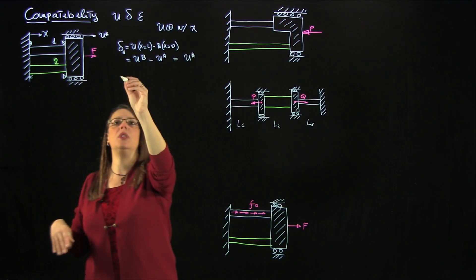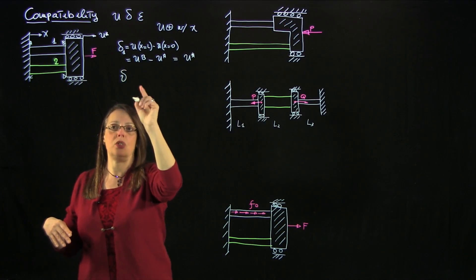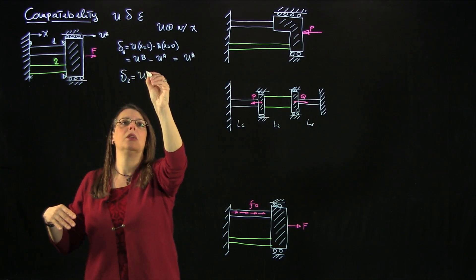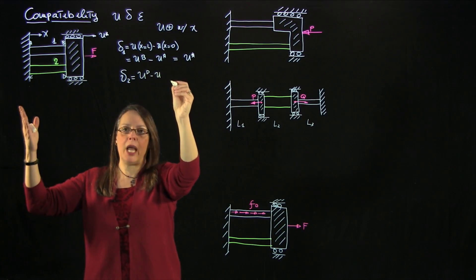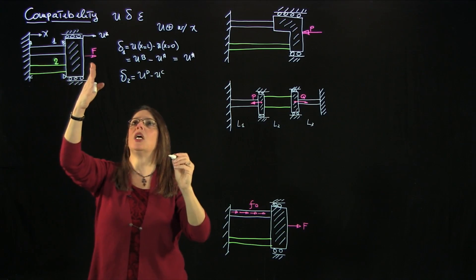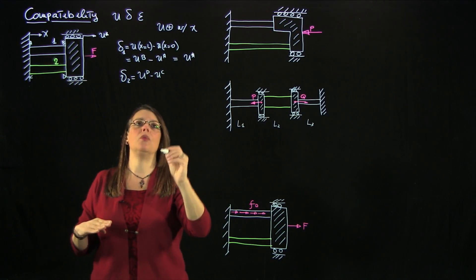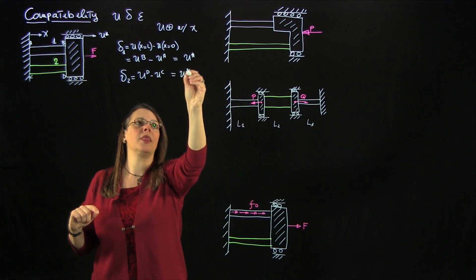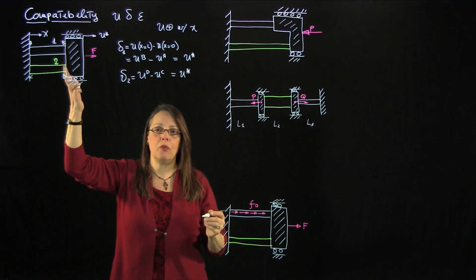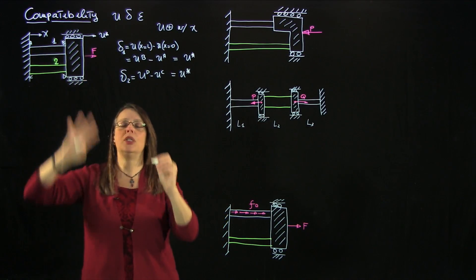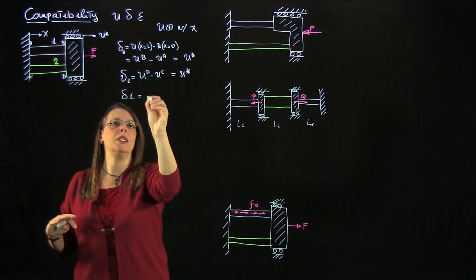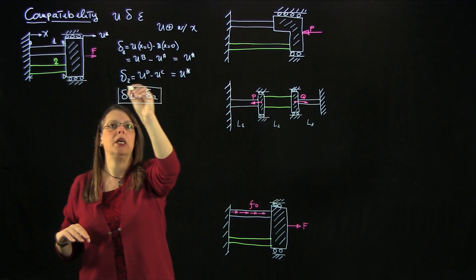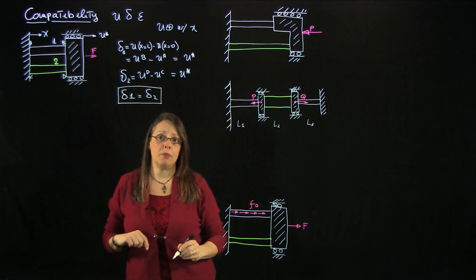Similarly for bar 2, the elongation delta 2 equals u_D minus u_C. u_D is attached to the block, so it's u-star. u_C is attached to the wall, so it's 0. So the elongation of bar 2 is also simply equal to u-star. You see that by the definition of elongation and the fact that the block is rigid, delta 1 equals delta 2. This is what I would call the compatibility relationship for this system.